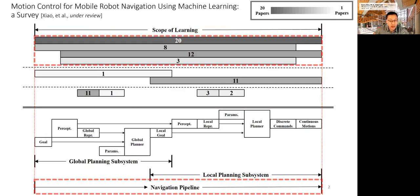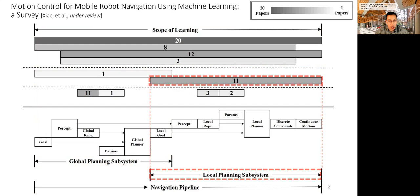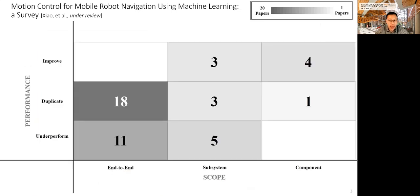A vast majority of work approach navigation from an end-to-end manner. On the subsystem level, a small amount of work learned global planning or local planning subsystem. On the component level, there are some work in learning global representation, a very small amount of work on learning global planners parameters, learning local representations, or learning local planners parameters. With all these learning approaches, you may wonder how well do they work? What are their navigation performance?